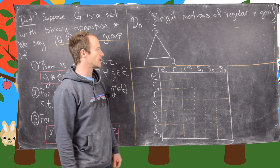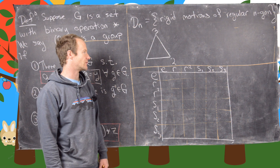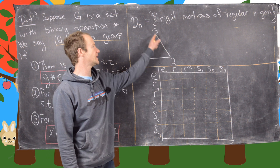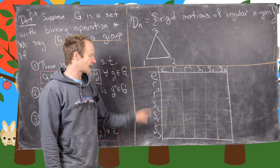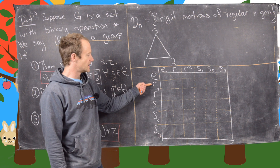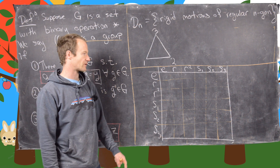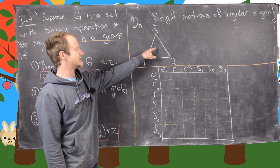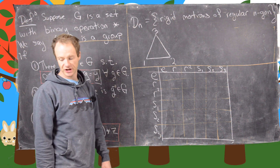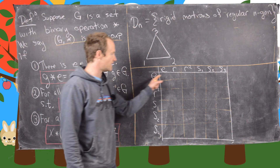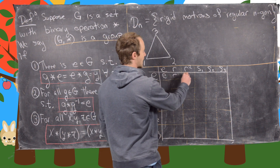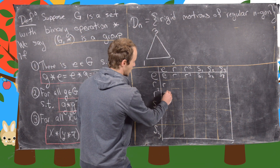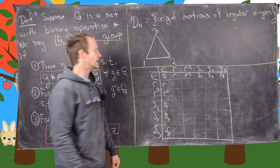I've organized the board so we can get a real feel for how these rigid motions combine. I've drawn the triangle with vertex 1, 2, and 3, and made a multiplication table for all the rigid motions: identity, rotation by 120, rotation by 240, and then all the reflections — going by column and row. Since the identity does nothing to the triangle, combining it with any other rigid motion changes nothing, so we can fill in the first row and first column easily.